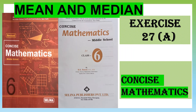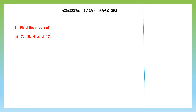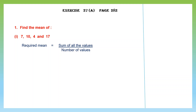Hello students, let's do mean and median, exercise 27A, page number 282. Find the mean of four numbers — it's like finding the average of these four numbers. The required mean will be: first we have to write the sum of all these values given, divided by the number of values.